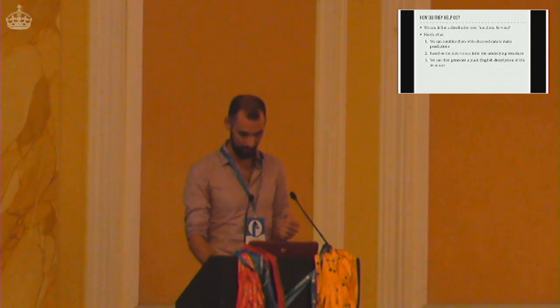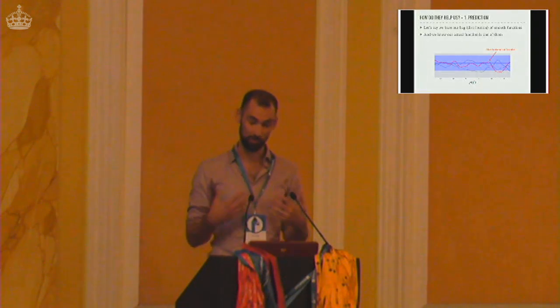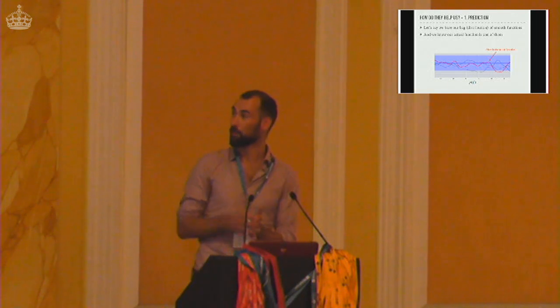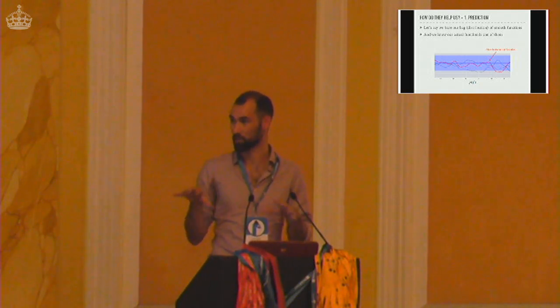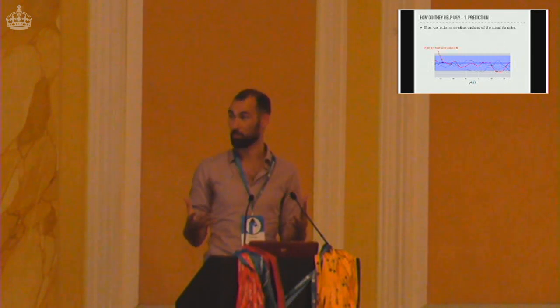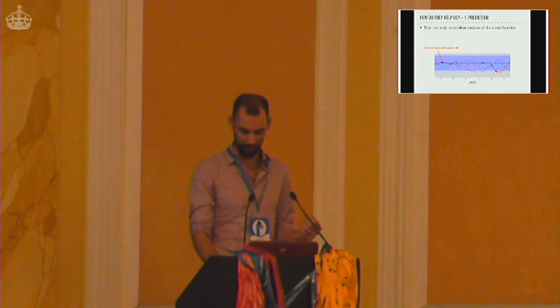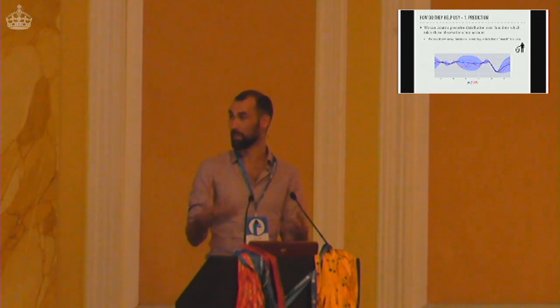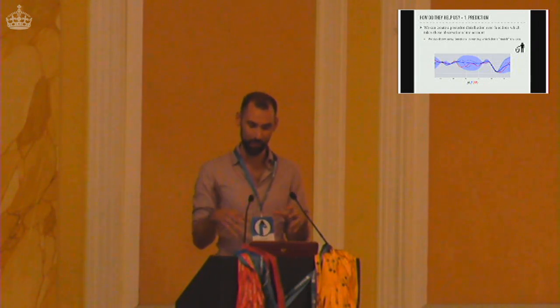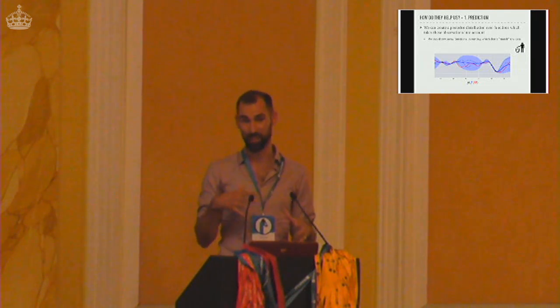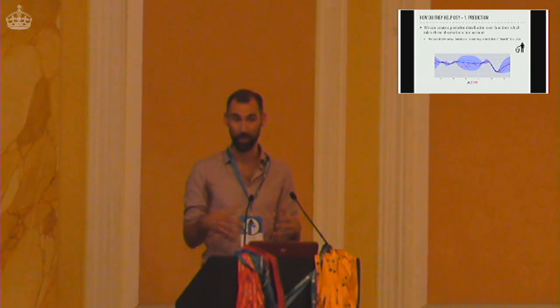Let's dive into prediction first. Say we have our bag of smooth functions where certain samples look like the dotted lines in the diagram, and we're assuming our actual function belongs to this family, but we've made no observations yet. Now let's assume we make some observations at certain time steps. Using the tools available in Gaussian processes, we can create this posterior distribution — we can update our distribution over functions given this data, or in crude terms, throw away functions in our bag which don't match the data.